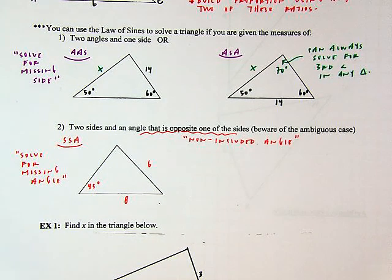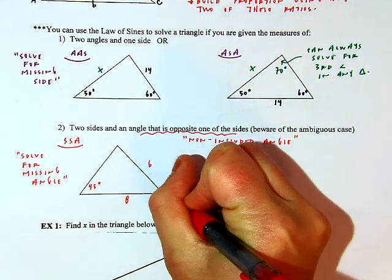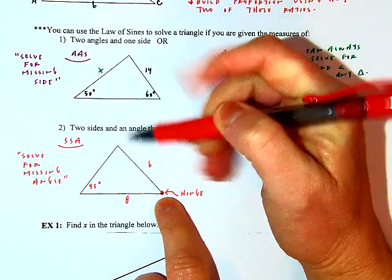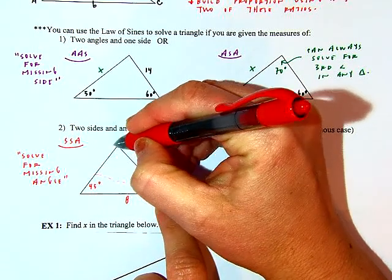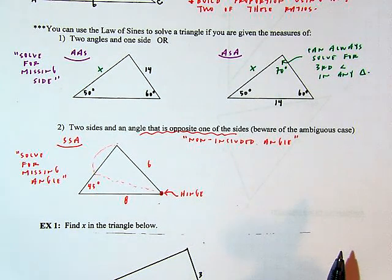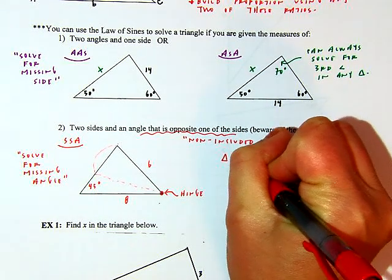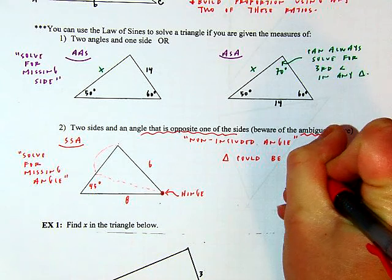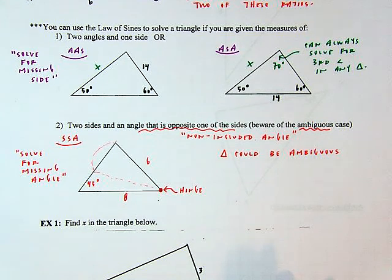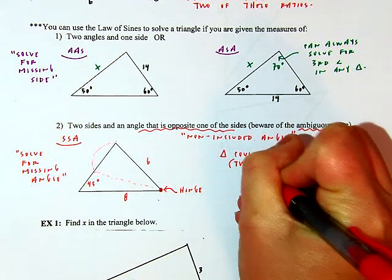Applying that to our model: the hinge is where the two marked sides meet, and the side of length 6 could swing into a second location, making a very different looking triangle. That is the ambiguous case — beware: the triangle could be ambiguous, meaning two very different looking triangles could emerge. Note I'm saying 'could be,' not 'always will be.'